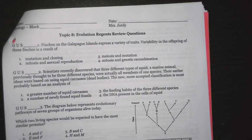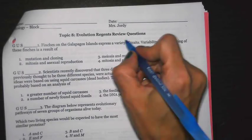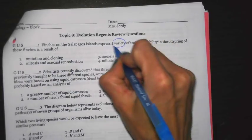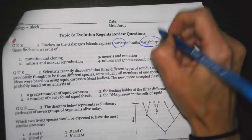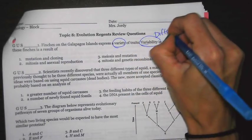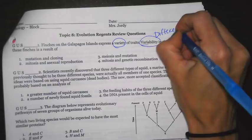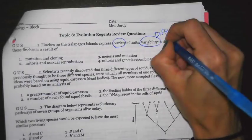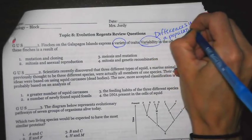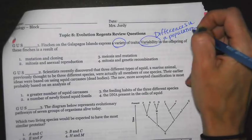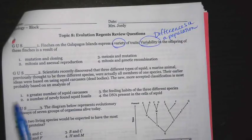Finches on the Galapagos Islands express a variety of traits. Variability in the offspring of these finches is a result of — notice it mentions variety twice. Variety is talking about differences in a population. When you're going through the test, you want to take your time, find out what the key words are, and underline.